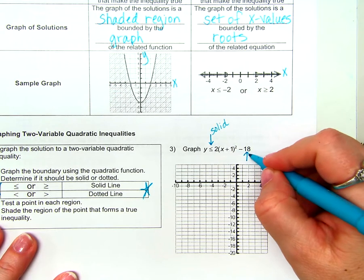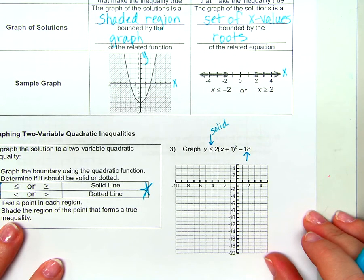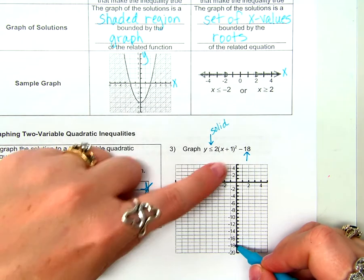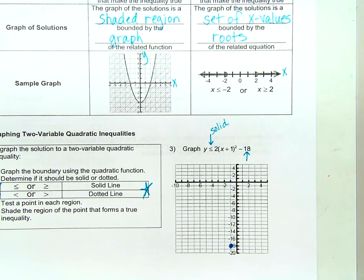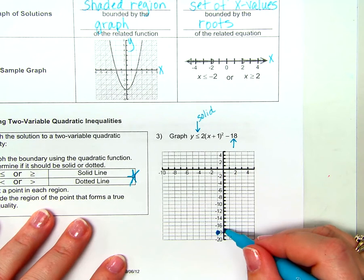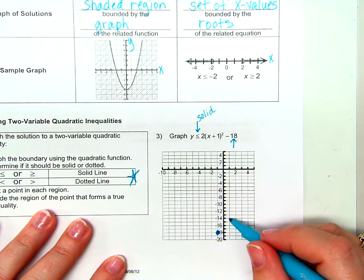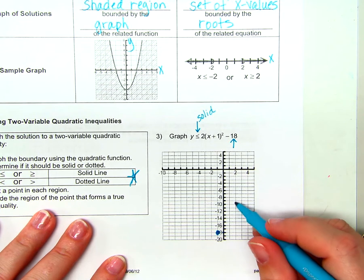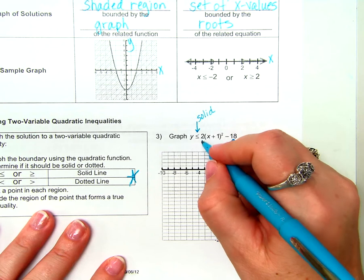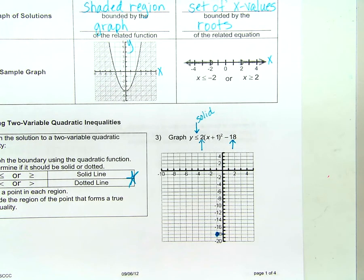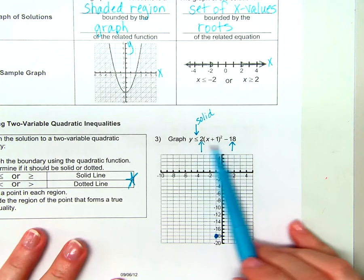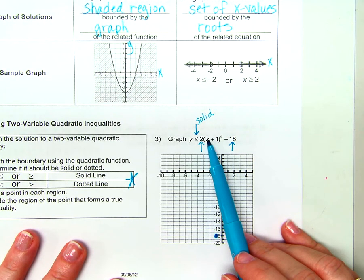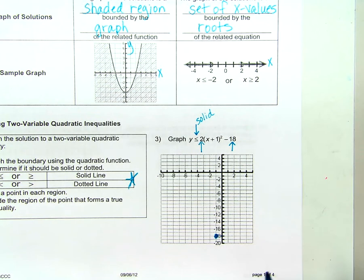Everything we know about transformations says — what am I supposed to do first? Go down 18. After I go down 18, where do I go? To the left one. And that's my vertex. A parent-function-shaped parabola means from the vertex I go over 1 and up 1, because 1² = 1; over 2 and up 4, because 2² = 4; and over 3 and up 9, because 3² = 9. But is this a parent-function-shaped parabola? No — it has a multiplier of 2. Does that affect X or Y? The Y, because it's on the same side as X, so the Y value is going to be multiplied by 2.